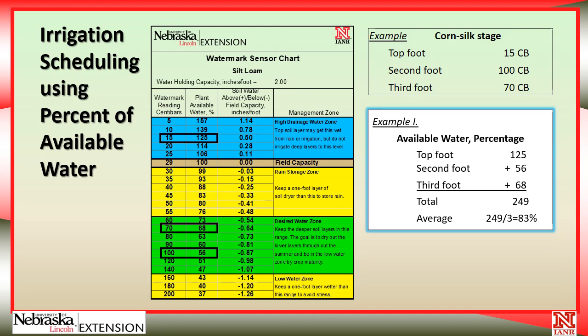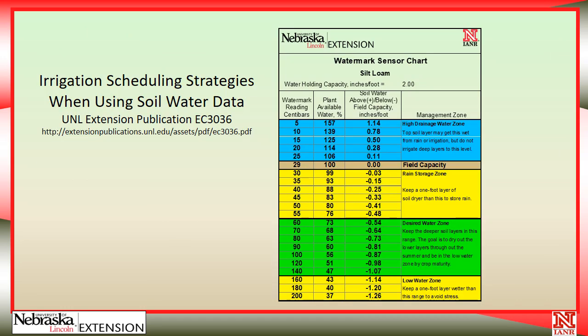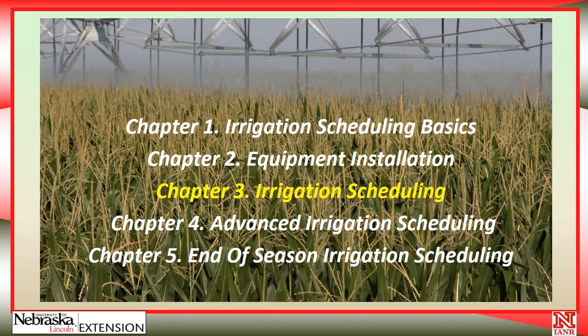This chart is part of a new University of Nebraska Extension publication, EC 3036, entitled Irrigation Scheduling Strategies Using Soil Water Data. You can search for it or use the URL listed on screen. This completes Chapter 3 covering a couple of simple irrigation scheduling techniques. Please join me for Chapter 4 where we'll discuss more advanced irrigation scheduling techniques.